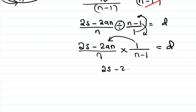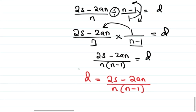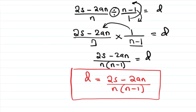Simplifying: since we are dividing, we multiply through, giving us 2S minus 2an over n times n minus 1, which equals D. So D as the subject of the formula is: D equals 2S minus 2an, all over n times n minus 1.